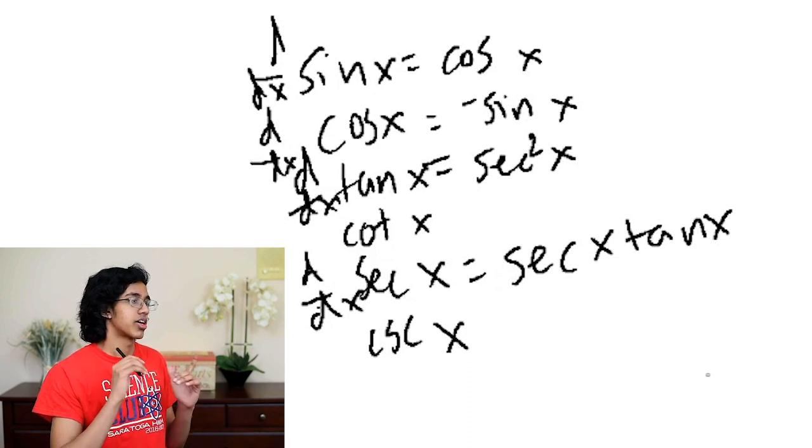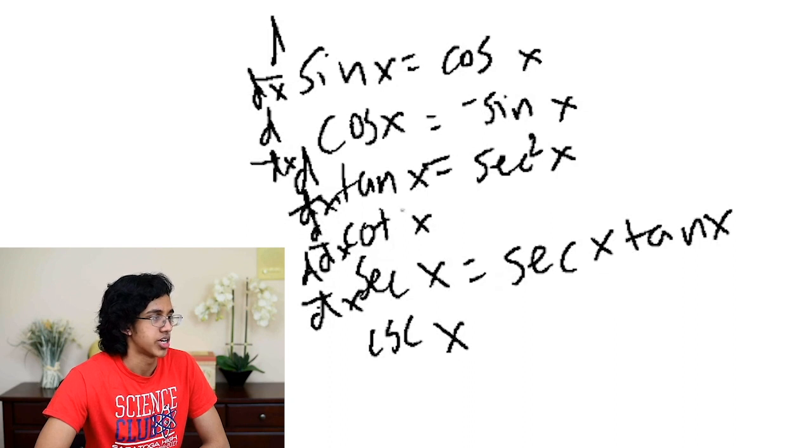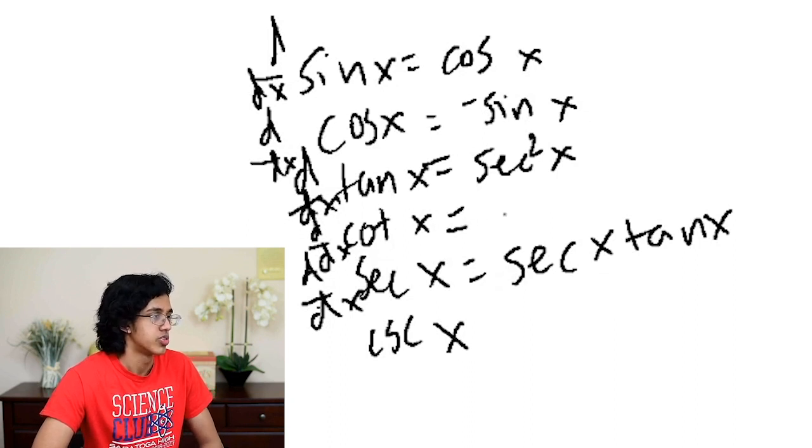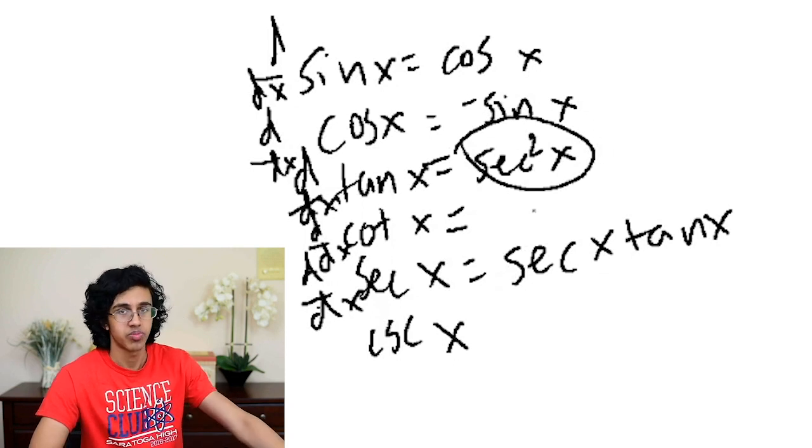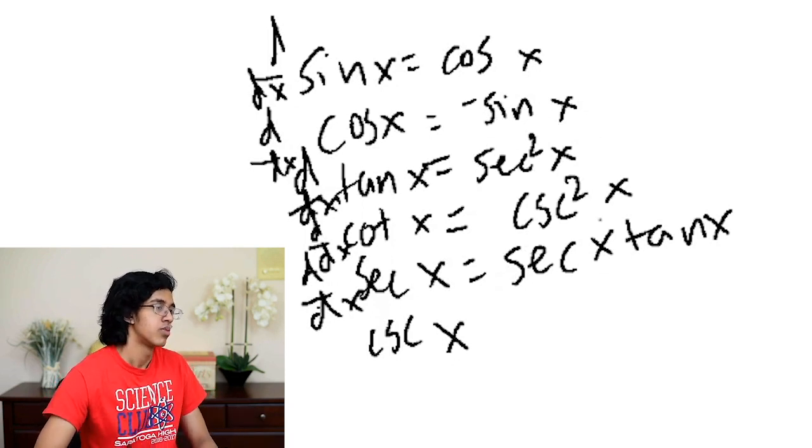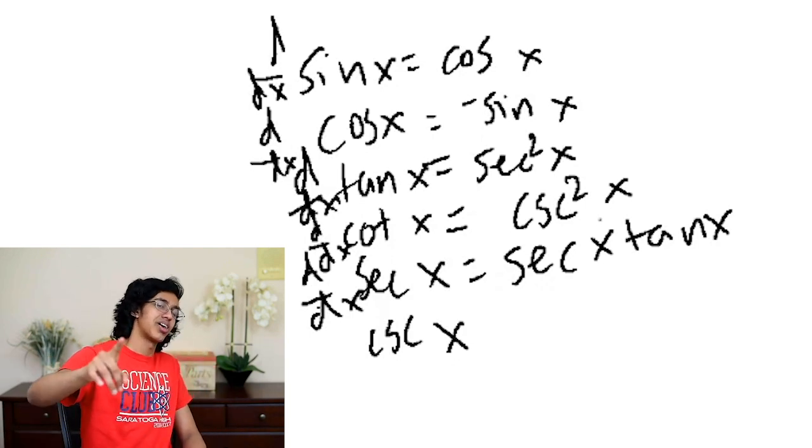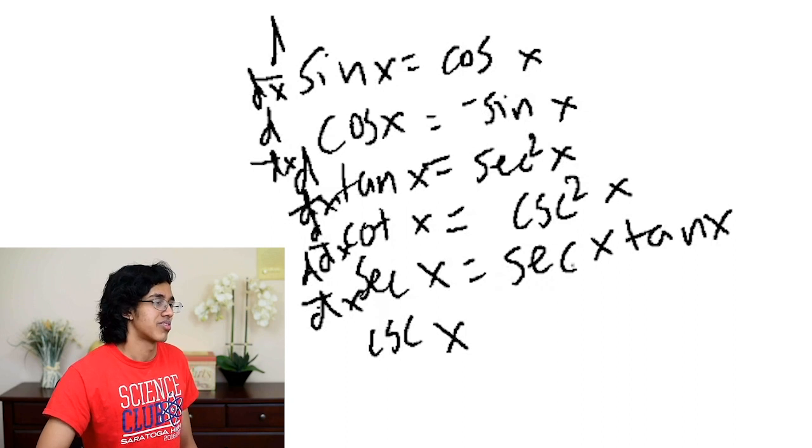Now, cotangent and cosecant x are really easy once you have tan and secant x down. So if you take d/dx of cotangent x, you basically take the exact same thing as tan x, except flip it to add a c. So in this case, it's cosecant squared x. But remember what I said? If it starts with a c, what does it do? It starts with a negative sign. That is right. So we put a negative sign. Very cool.